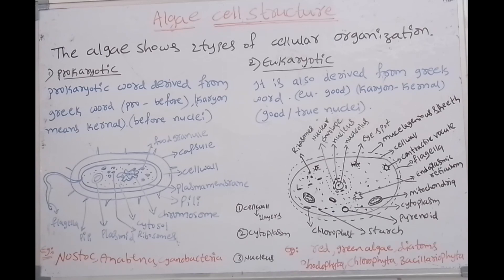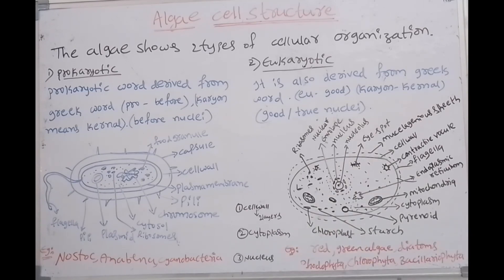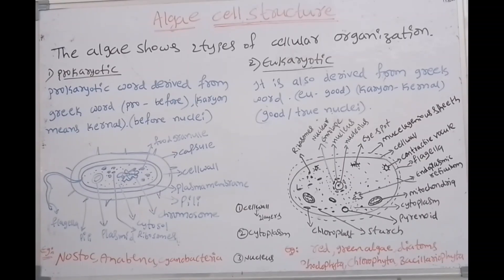The minimum chromosome number in algae is 2, that is N equal to 2. Maximum number is 592. The cell possesses distinct mitochondria, plastids, endoplasmic reticulum, ribosomes, and Golgi apparatus. The cell possesses many cell organelles.